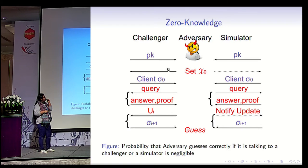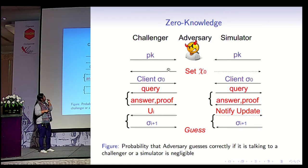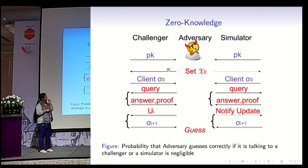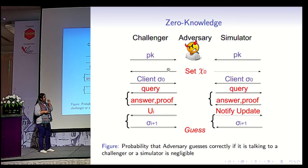The adversary can ask two kinds of queries: normal membership and non-membership queries, and update queries. For membership and non-membership queries, the query goes to the challenger who computes the answer and proof. In the case of the simulator, the query goes to the simulator and it is given oracle access to the set, meaning it gets only the answer of the query with respect to the set, which is a bit, and then simulates the proof without any other information about the set. For an update query, the simulator only receives a notification that the adversary has updated, without learning what the update is at all, capturing that the update cannot leak any information beyond the fact that an update has occurred.